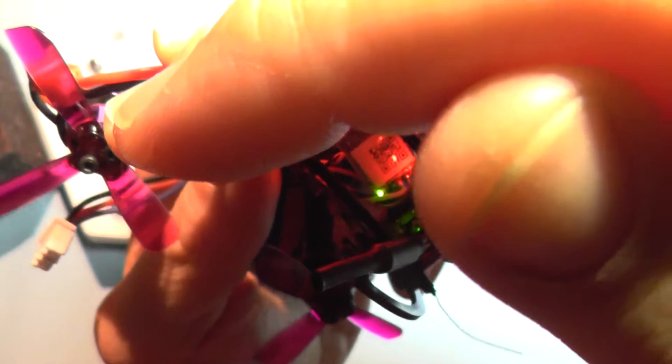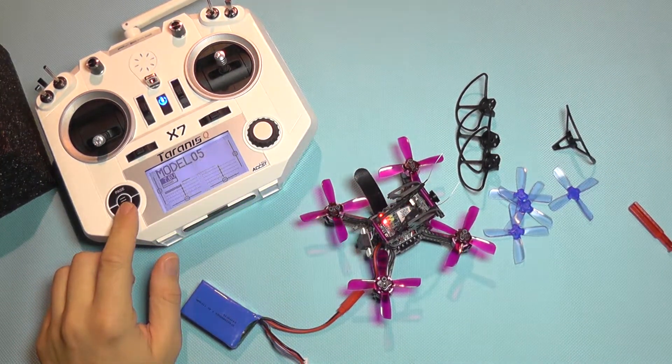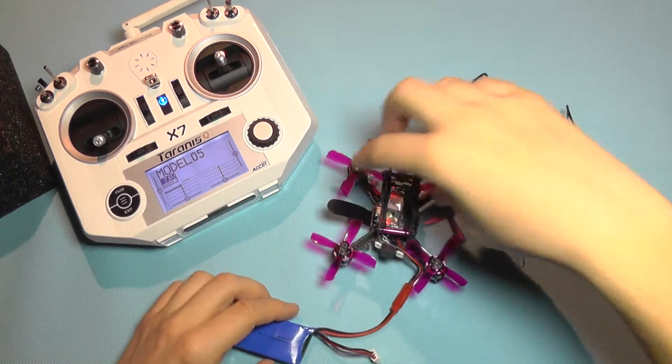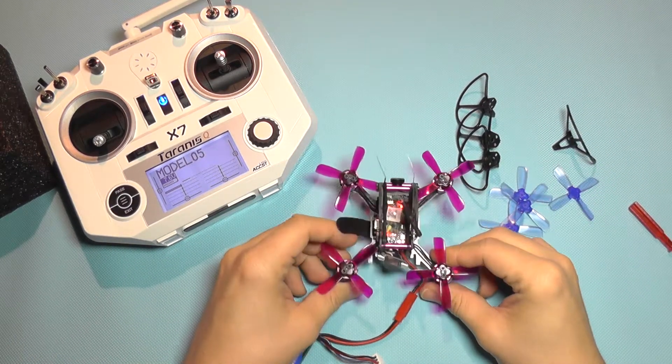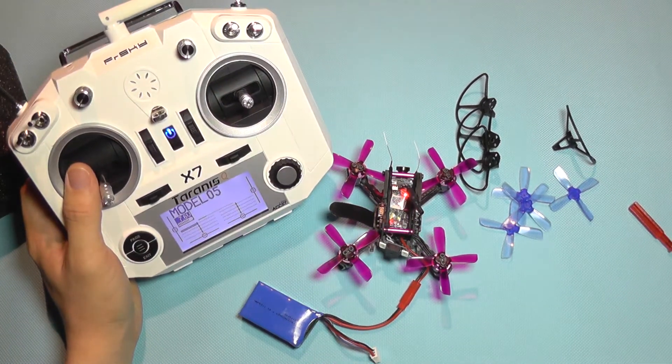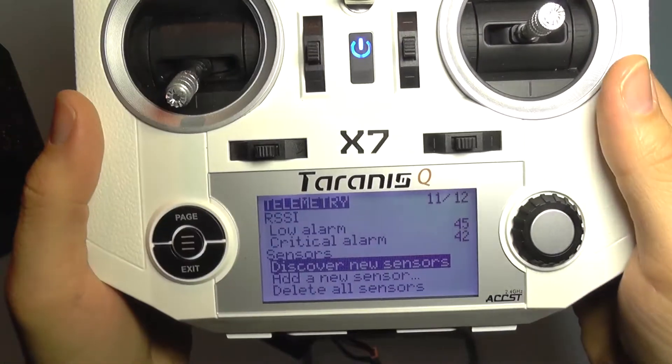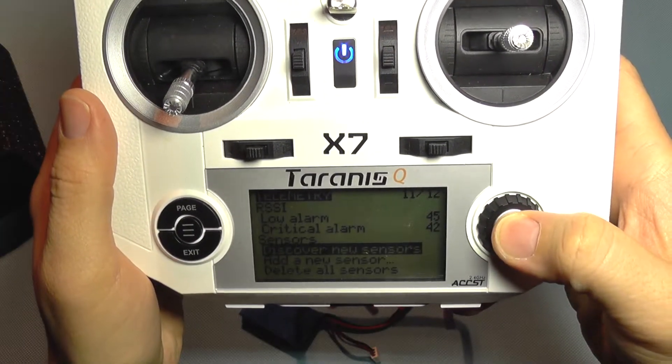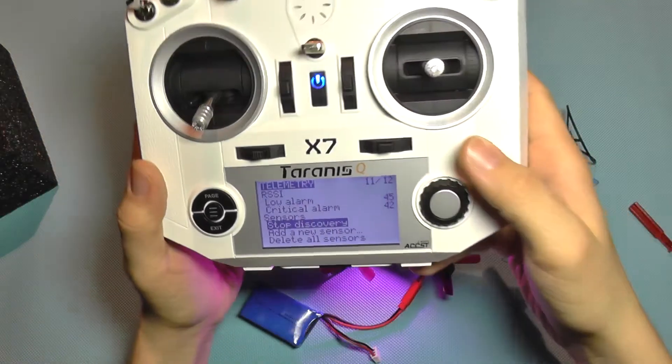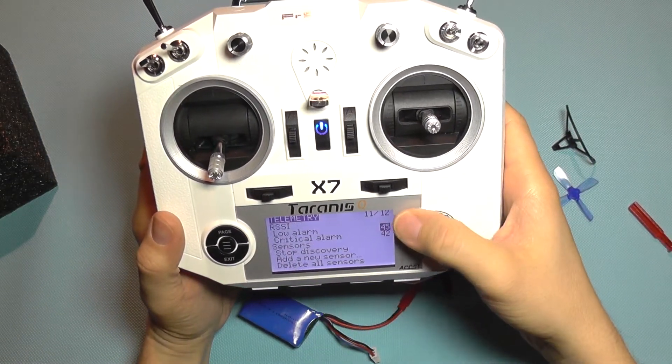If you can see, the receiver LED here has just turned steady green which means that is now connected. The transmitter is now binded. Let's see if the receiver has some sensors connected to the flight controller. In the telemetry menu I'm going to try to discover new sensors.